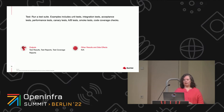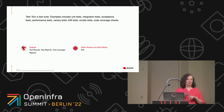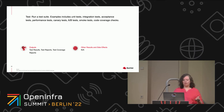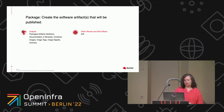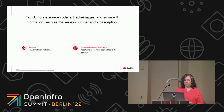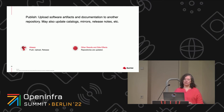Then in a test step you're going to run a test suite. There's a wide variety of tests you can run: unit tests, integration tests, acceptance tests, performance tests, canary tests, A/B tests, smoke tests, code coverage checks — these produce test results, test reports, and test coverage metrics. Then in a package step you create the software artifacts that will be published, including container images with tags and digests and any archive files you need. In a tag step you annotate your source code or artifacts with information like version number and a description. In a publish step you upload these to another repository and might also update various catalogs, mirrors, or release notes — sometimes called push, upload, or release.